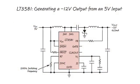This second drawing shows an inverting converter using the LT3581. Here the input is 5 volts, while the output is minus 12 volts. This circuit can provide 625 milliamps of output current.